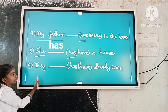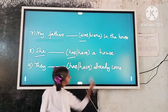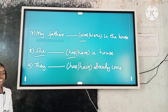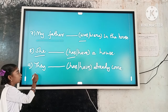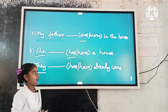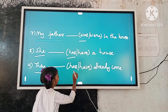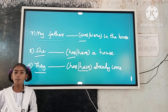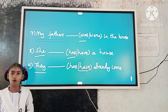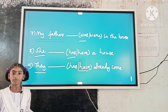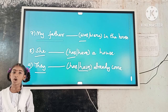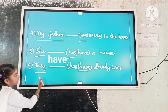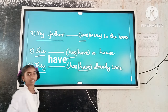Example number 9: They dash already come. Here, the subject is plural. 'Have' is a plural verb form. So, plural subject and plural verb form agree. The answer is: They have already come.